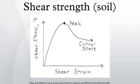Structure of soils is described by terms such as undisturbed, disturbed, remolded, compacted, cemented, flocculent, honeycombed, single-grained, flocculated, deflocculated, stratified, layered, laminated, isotropic and anisotropic. Loading conditions include effective stress path — i.e., drained and undrained — and type of loading, i.e., magnitude, rate, and time history.